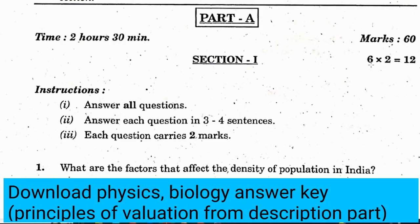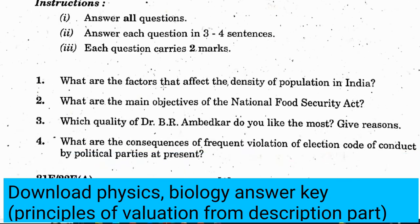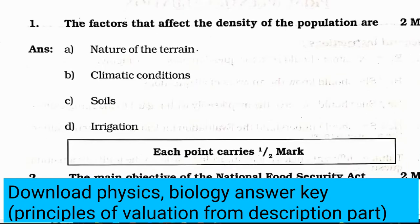In Section 1 we have 6 questions. Each question carries 2 marks. First question: what are the factors that affect the density of population in India? The factors that affect the density of population are nature of the terrain, climatic conditions, soils, irrigation. Each point carries half a mark, so writing 4 points will give 2 marks.